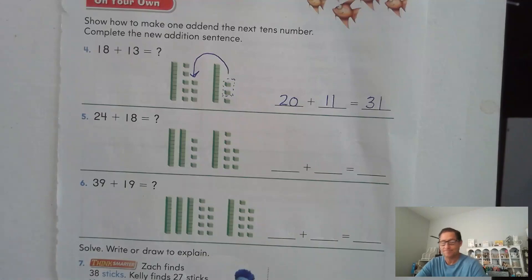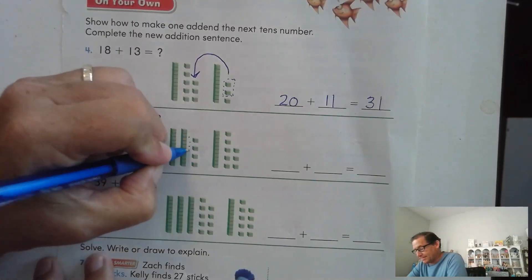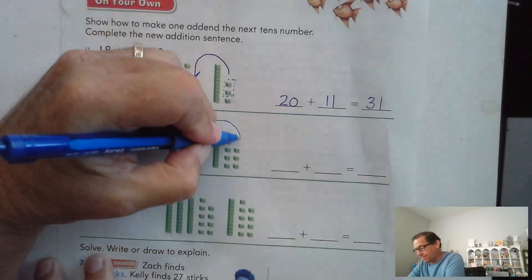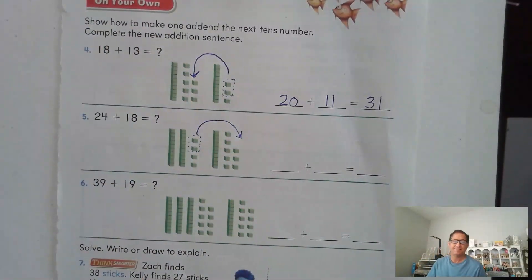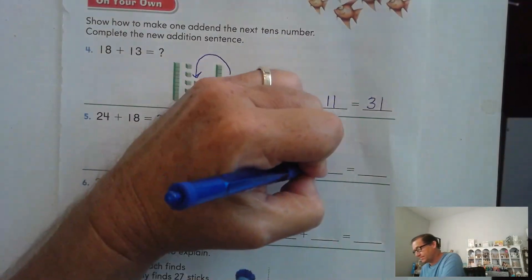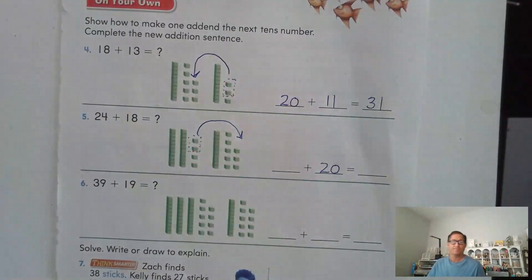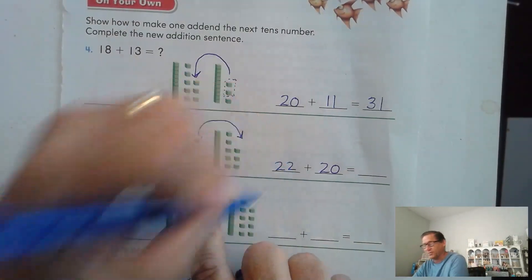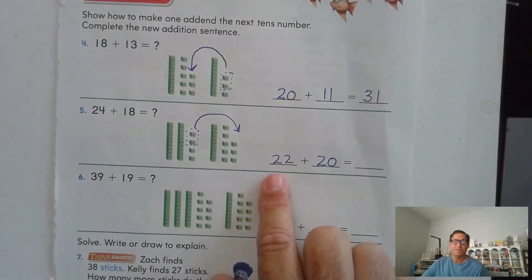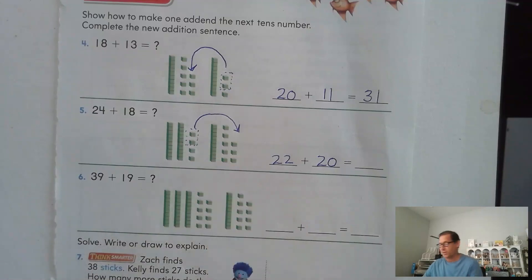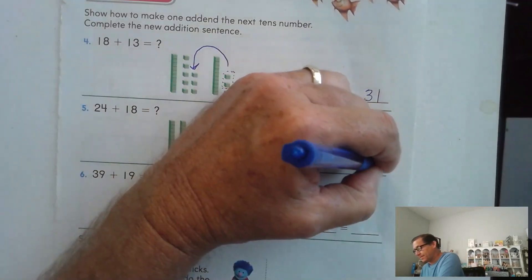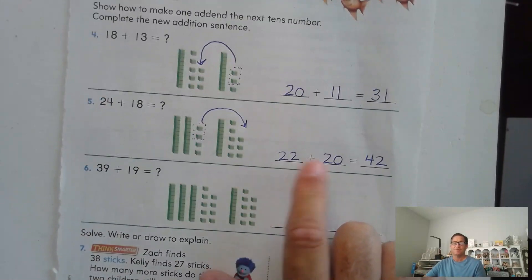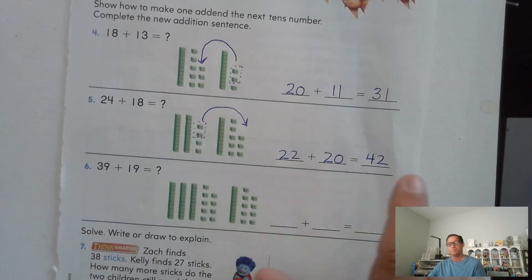24 plus 18. I'm going to take two ones from 24 and give it to the 18. 18 plus 2 is 20. If I took two of the ones from 24, now I have 22 left. So 22, 32, 42. All I did was count forward from 22 two 10s. 22, 32, 42.